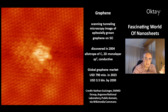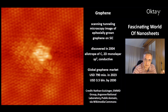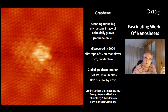Graphene has a 2D monolayer structure with sp2 hybridized carbon atoms. Carbon has three p orbitals, and the third p orbital is part of a pi electron system — that is electron delocalization — which makes graphene conductive. The global graphene market this year is 790 million US dollars, and is predicted to be a 3.5 billion US dollar market in 2030.